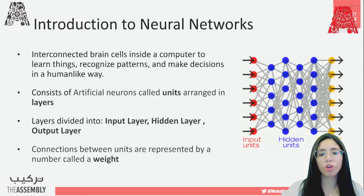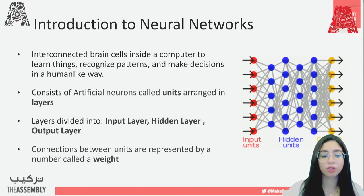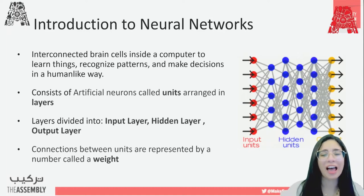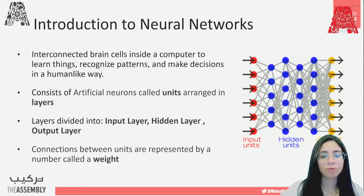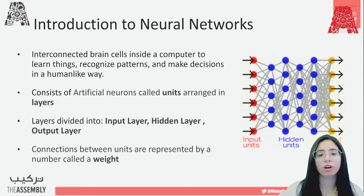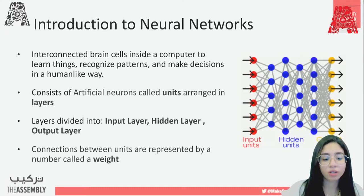Neural networks are considered like brain cells interconnected inside a computer, used for learning things, recognizing patterns, and making decisions like the human brain. Of course it's not as accurate as the human brain, but it's reaching a really good accuracy. Neural networks consist of different artificial neurons called units, and those units are arranged in layers as shown in the figure.